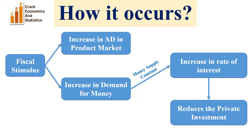So, fiscal stimulus causes a rise in the rate of interest, which leads to a fall in private investment — and this is known as the crowding out effect. Due to the crowding out effect, we cannot get the desirable impact of fiscal stimulus on output. If you find this video useful, kindly like, share, and subscribe to our YouTube channel Crack Economics and Statistics. Thank you.